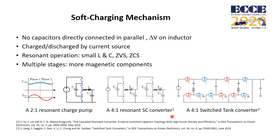The charge sharing loss can be reduced by soft charging. Soft charging requires inductors as the current source to reduce the current spike. With the inductor, capacitors are never directly connected in parallel. All the capacitors are charged and discharged by the current source. The resonant operation also reduces the LC size and creates soft switching opportunities.